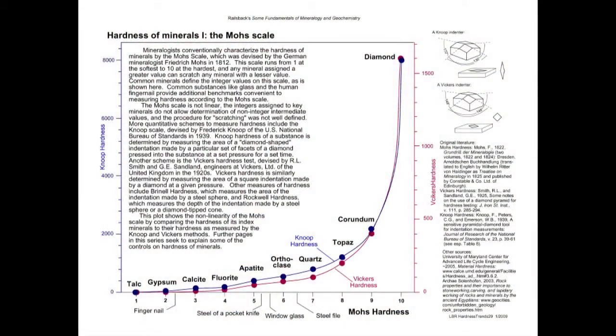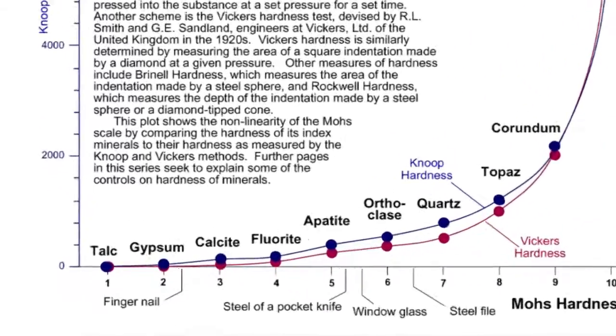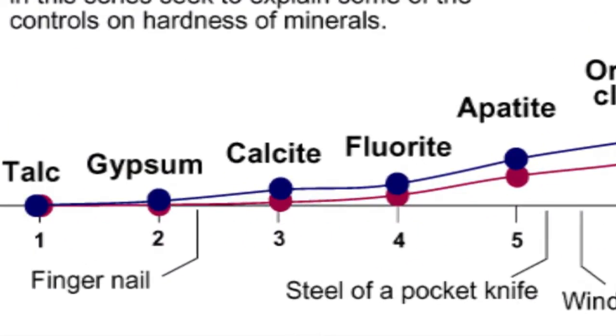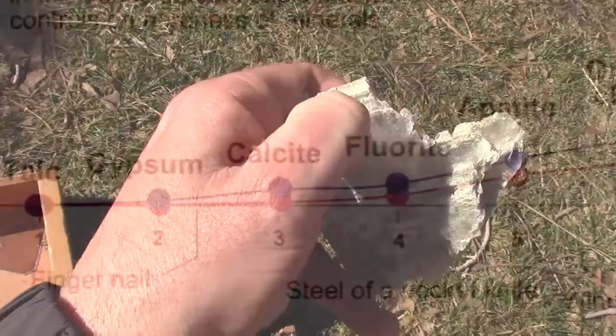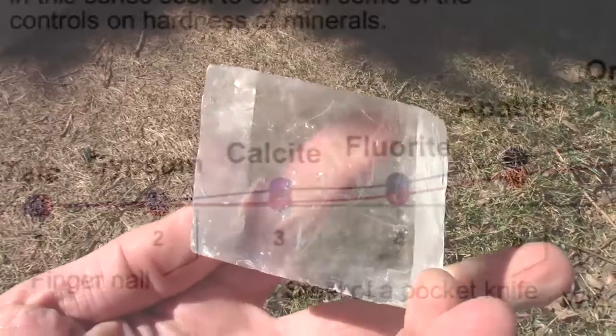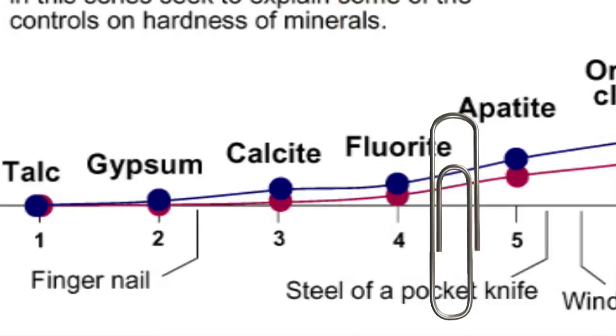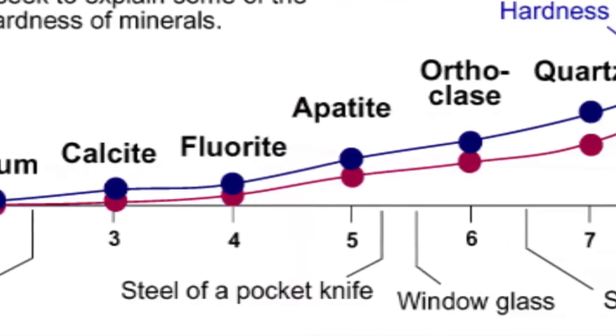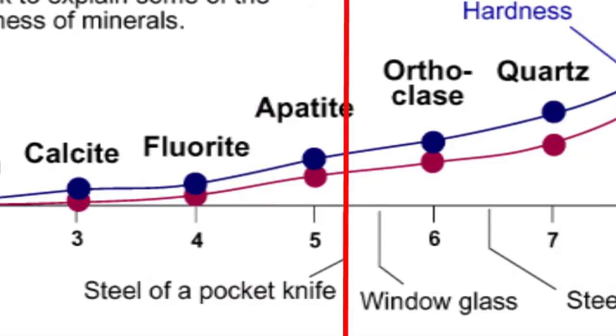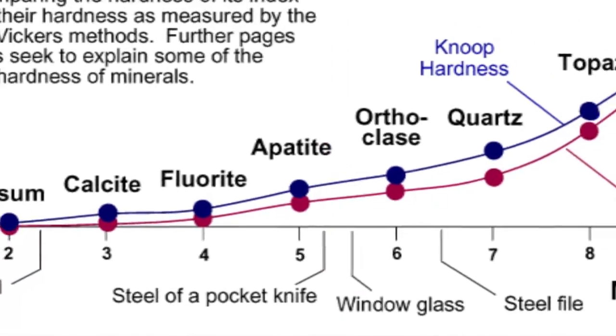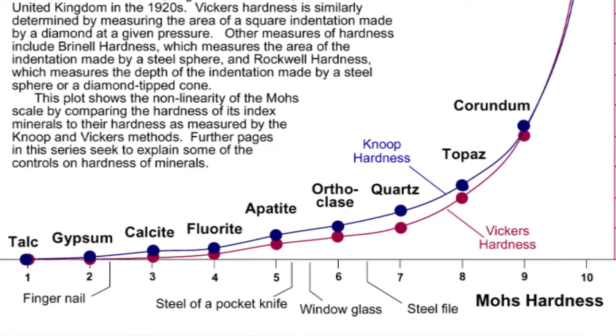Some common minerals we can use to test for hardness are your fingernails, which should be about 2.5, and thus scratch talc or gypsum but not calcite. A copper penny is 3.5 and will scratch calcite but not fluorite. A paperclip is around 4.5 and can scratch fluorite but not apatite. A steel knife is around 5.5 and will scratch apatite but not feldspar. And being that this is about halfway along the hardness scale and most useful to divide the minerals, we use 5.5 as a benchmark.